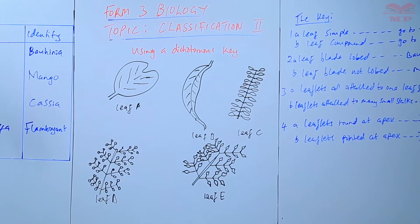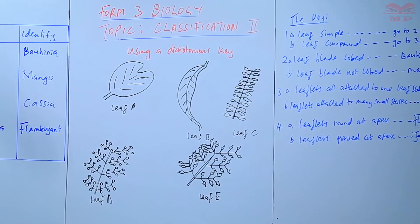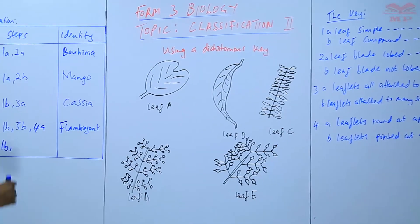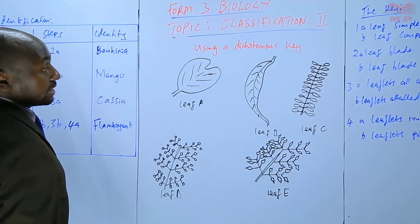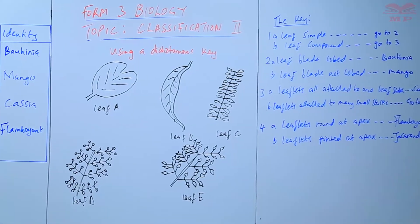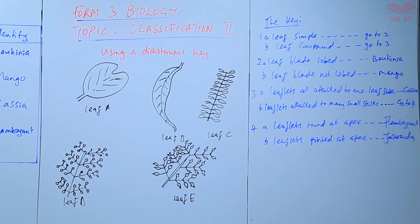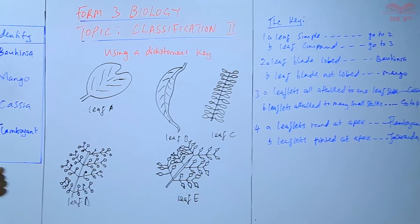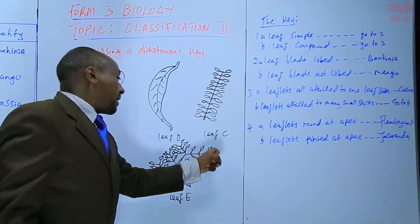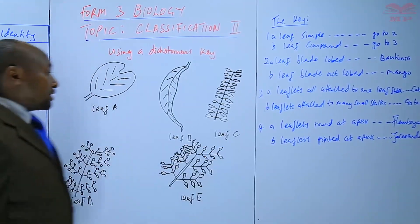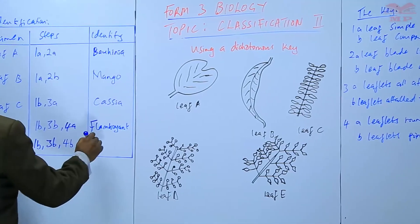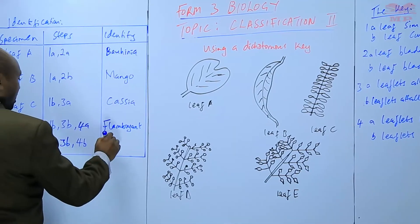Leaf E is compound as well, so step 1b, go to step 3, leaflets attached to many stalks — step 3b. Then step 4: leaflets pointed at the apex — the apex is pointed, so that is step 4b. The identity is Jacaranda.